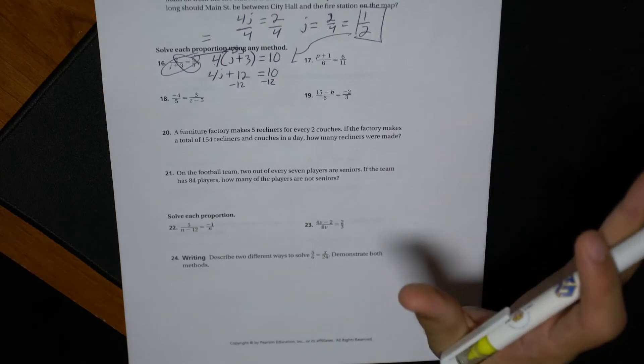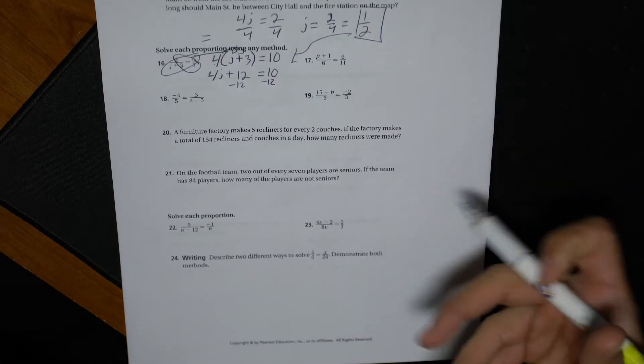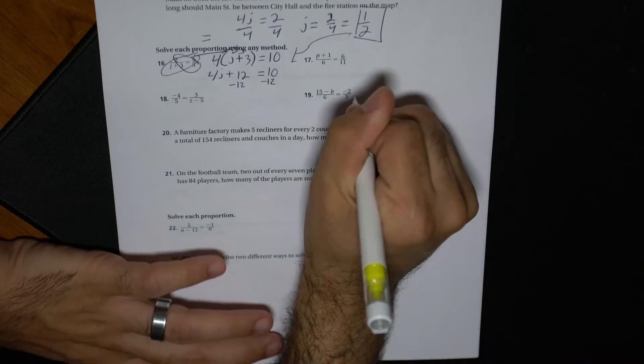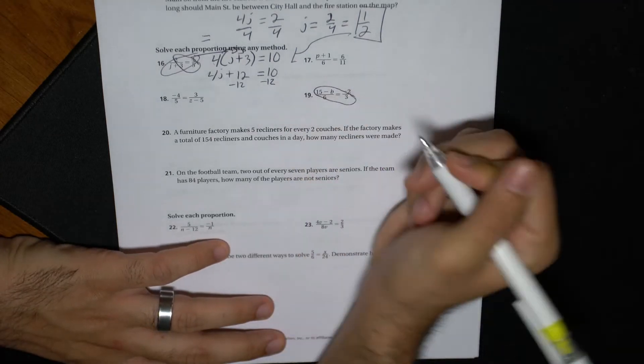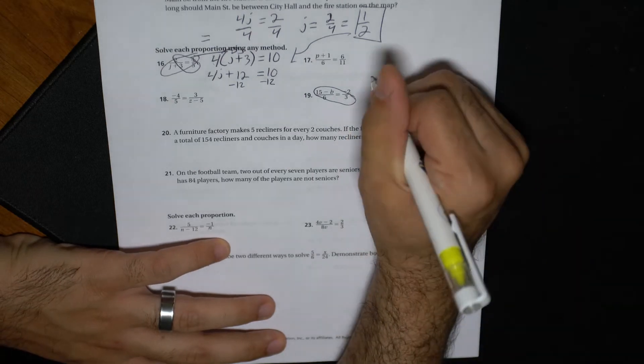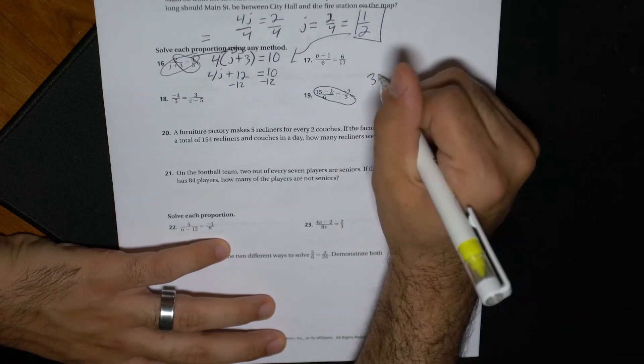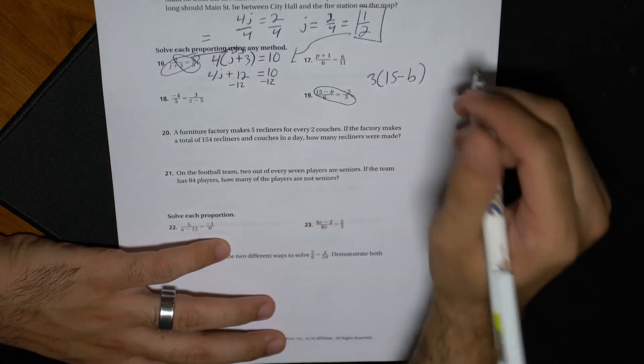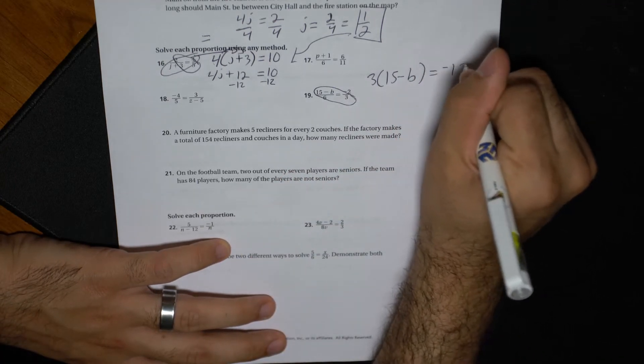So it's the same job, same product, just a couple extra steps. So one step at a time, right here. Same thing. Cross multiply, so we're going to say three, this is problem number 19 right now, times 15 minus b. Then we have six times negative two is negative four.